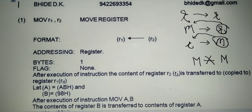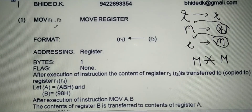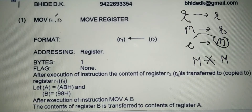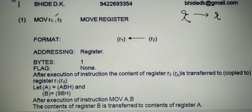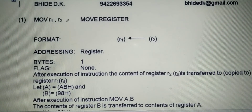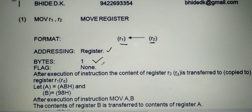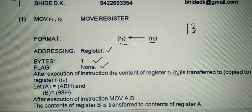The first instruction of this group is MOV R2 to R1. R2 is called the source register and R1 is called the destination register. Data from register R2 can be transferred to register R1. Only registers are used in this instruction, therefore the addressing mode is register. It is a one-byte instruction and flags affected equals none. In all 13 instructions of the data transfer group, flags affected equals none.